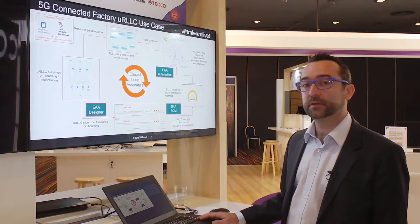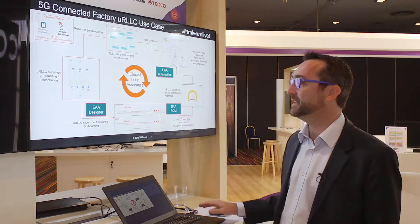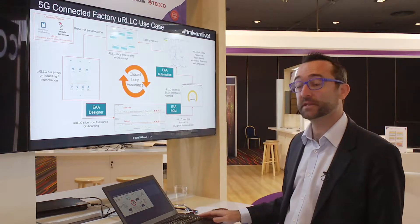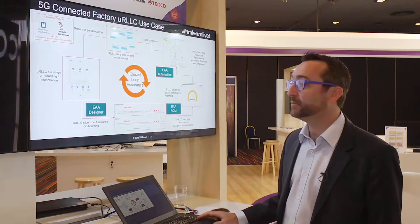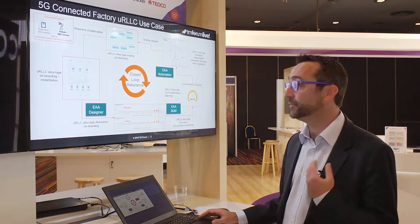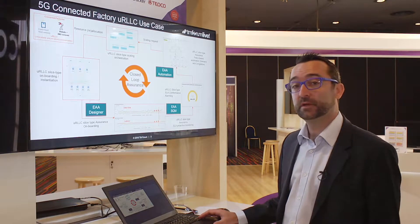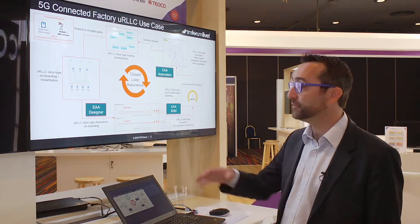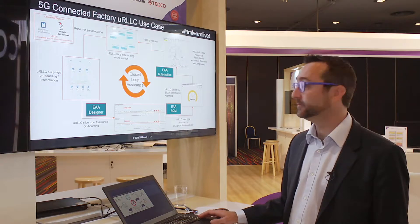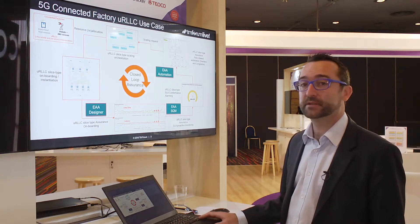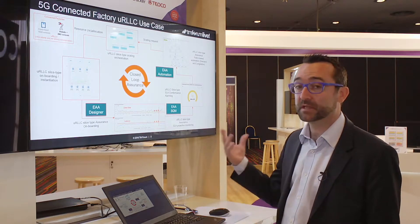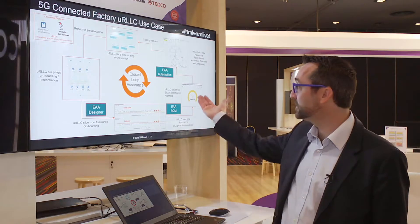We are now going to look at the catalyst demonstration in which, as part of the EA Designer, we could consume network service descriptors coming from the orchestrator on the Netcracker side. The EA Designer is where we have implemented the Performance Management API, the TMF628, allowing us to flexibly discover and subscribe to the collection of measurements coming from the different 5G network equipment. We will then look at the EA-SQM, where we have the monitoring of the different KPIs and KQIs for the 5G network slices SLA measurements and conformance alarms.